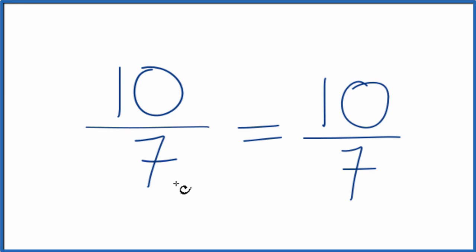Note that 10 sevenths is an improper fraction. That's because the numerator here is larger than the denominator. So we could change it to a mixed number. Let's do that.